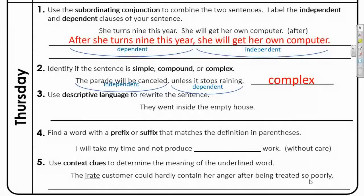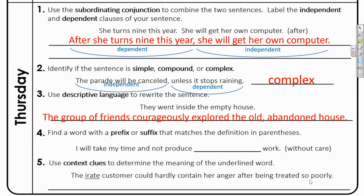Number three — my favorite. Use descriptive language to rewrite the sentence: 'They went inside the empty house.' Not very exciting. I don't like how it starts with that pronoun 'they' — who's they? So when I went to edit this sentence, I wrote: 'The group of friends courageously explored the old abandoned house.' You do not have to add all of that. You can just add a few adjectives to describe the house, like old or abandoned, or say they nervously went inside. Anything you can do to make it more descriptive will improve that sentence dramatically.